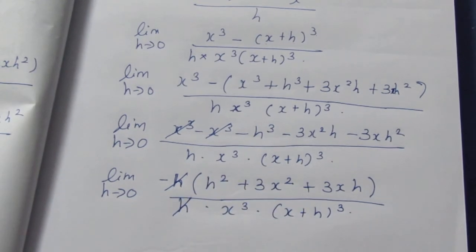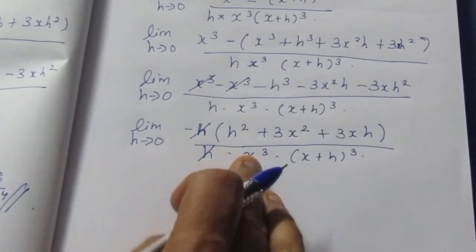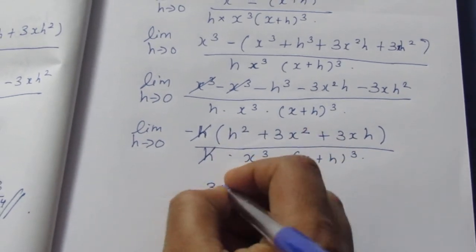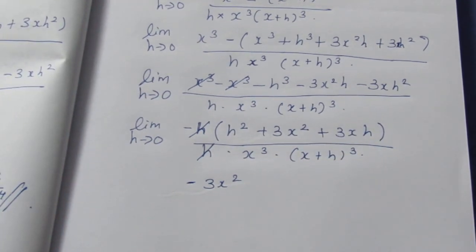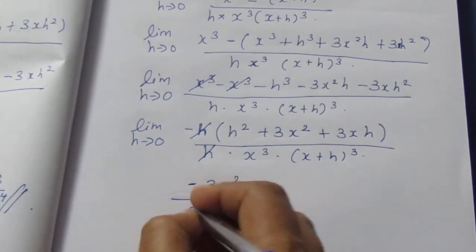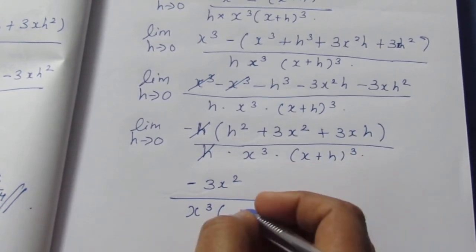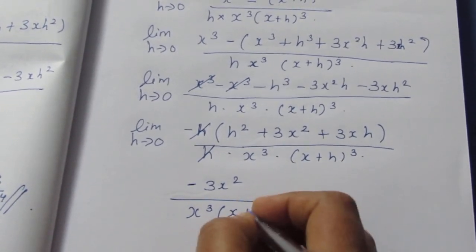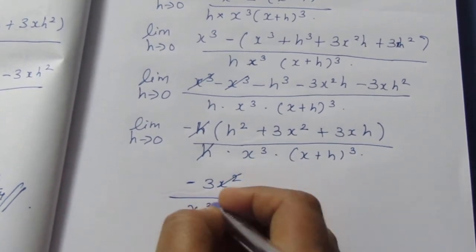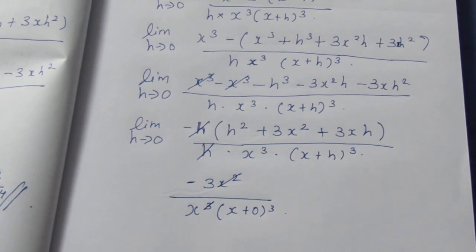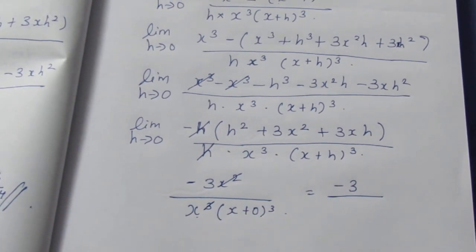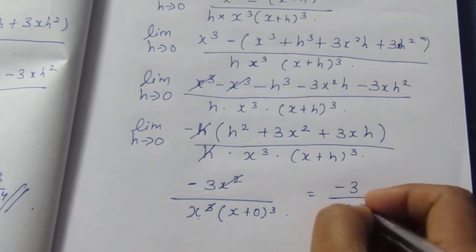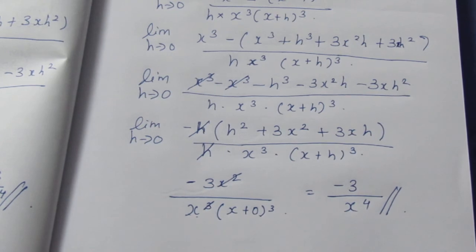Taking minus h as common, h cancels with the h in the denominator. We are left with limit h tends to 0 of minus h cubed minus 3x squared minus 3xh, divided by x cube into (x plus h) whole cube. Now substituting h equals 0: the terms with h vanish, leaving minus 3x squared divided by x cubed into x cubed, which gives minus 3 by x to the power 4.